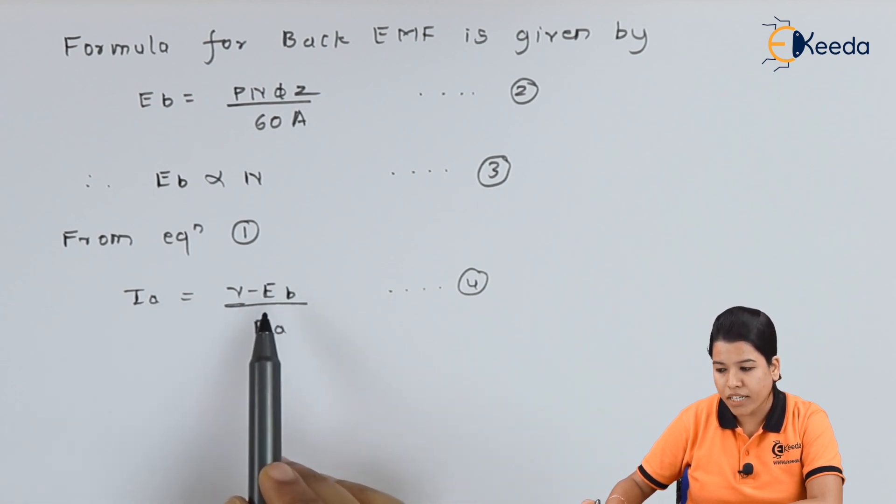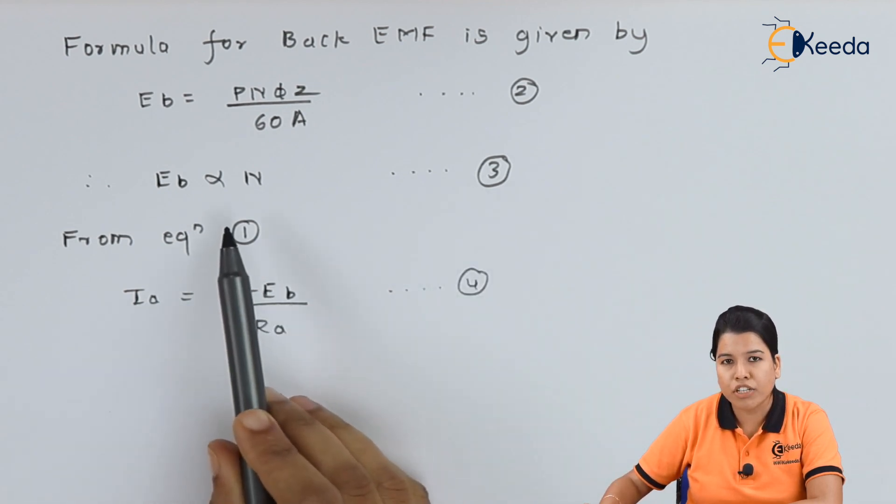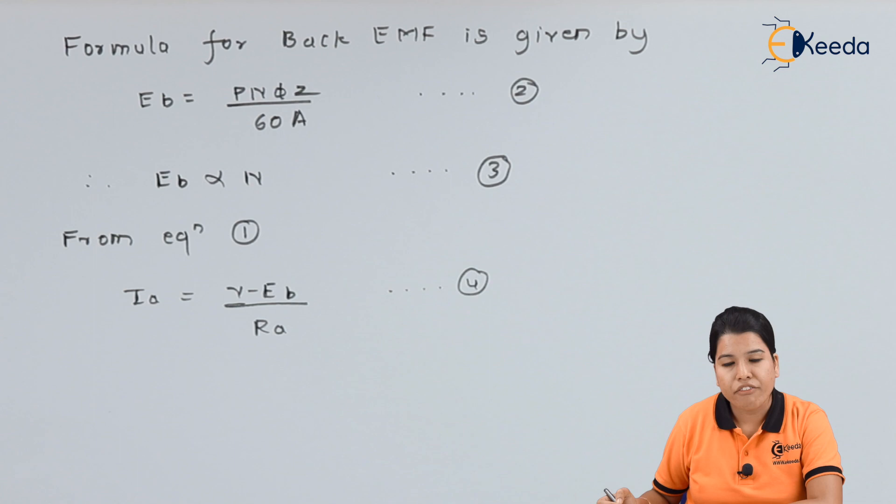But from equation 3, the back EMF is directly proportional to speed. Hence we can say that armature current Ia is directly proportional to speed. Now if the speed of motor is high: